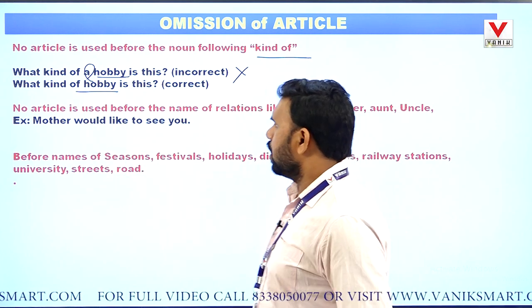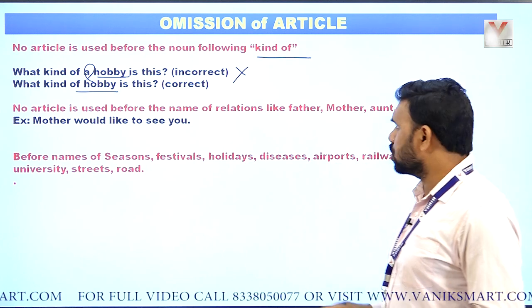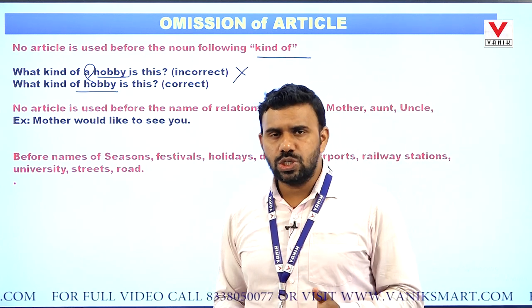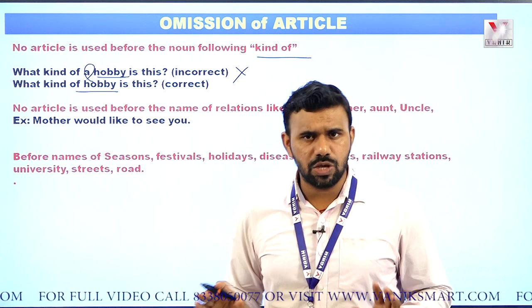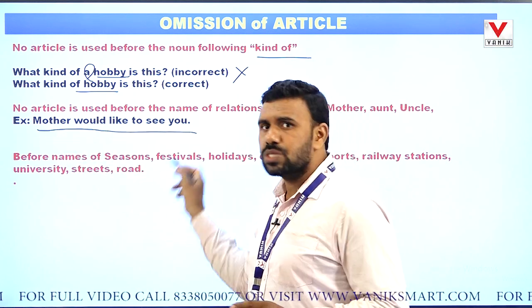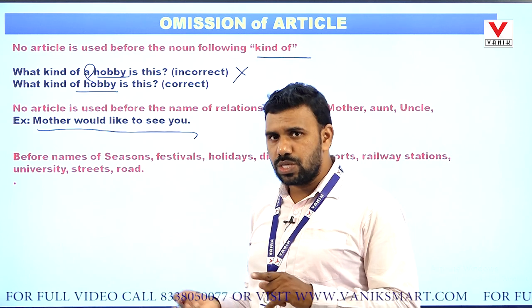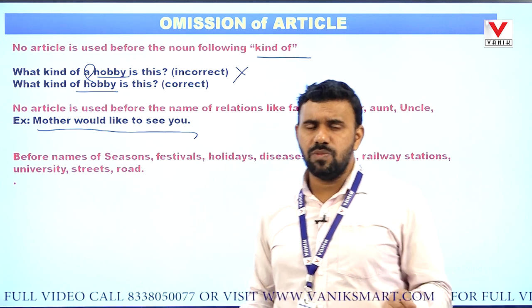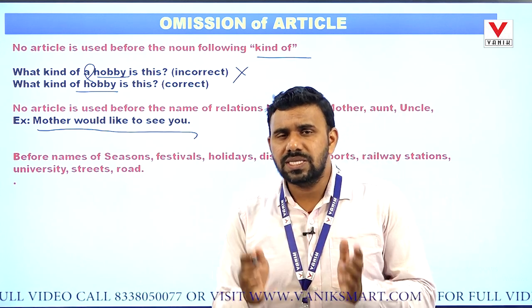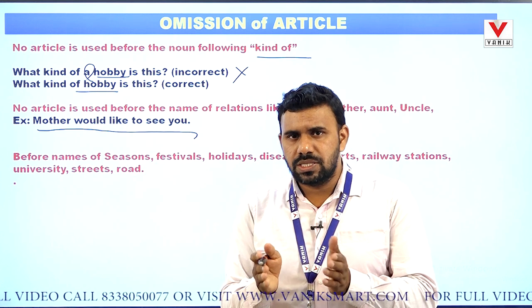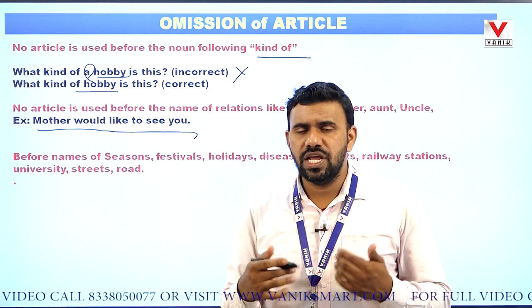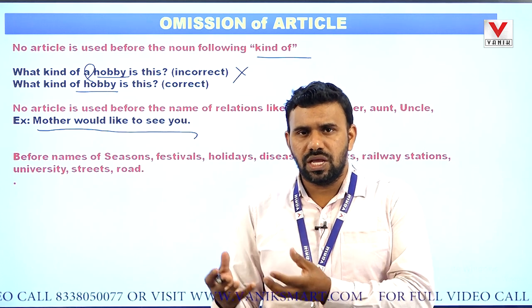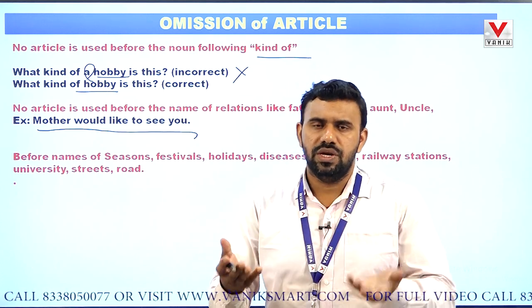No article is used before names of relations like father, mother, aunt, uncle, brother, sister. For example, 'Mother would like to see you' — not 'The mother would like to see you'. However, we can use 'the' when particularized, as in 'The father in him woke up for the orphan' — the fatherly qualities in him came out seeing the orphan.